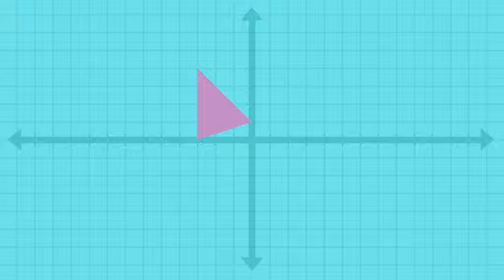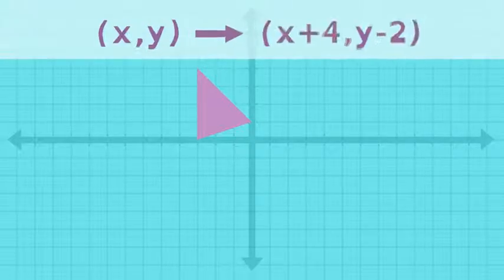Then, to show where the shape is moving, we can use a mapping notation, like this, to show the translation.